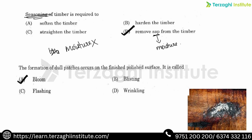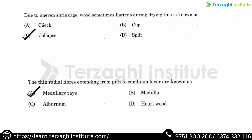The formation of dull patches on a finished polished surface of timber is a known defect. Due to uneven shrinkage, wood sometimes flattens — we call this collapse. Be careful: uneven shrinkage causes the timber to flatten, which is referred to as collapse.